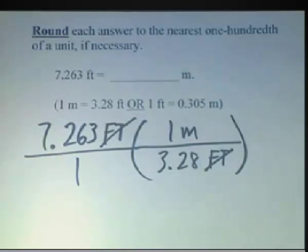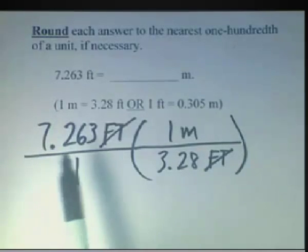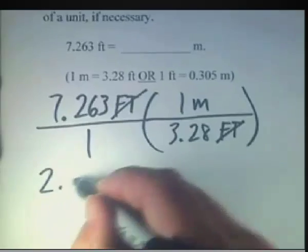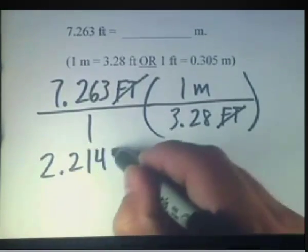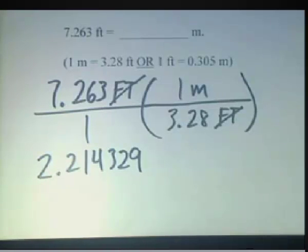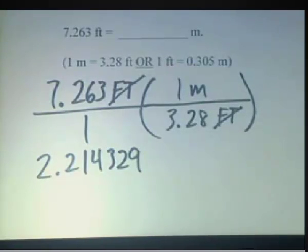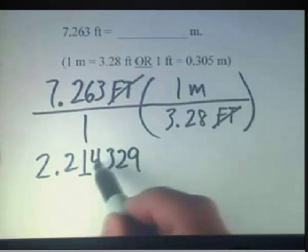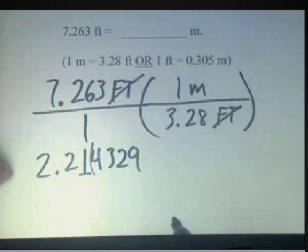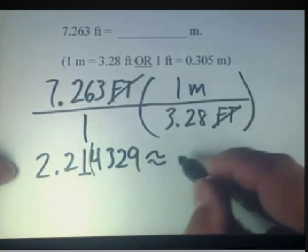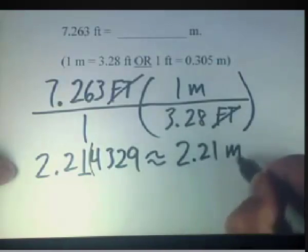So now we simply do our division problem. We're going to divide 7.263 by 3.28, and doing this on our calculator, we get a number like 2.214329, and so forth. We want to round this to the nearest one-hundredth of a unit. Here's our tenth, and here's our hundredth, and since 4 is smaller than 5, we leave it as is. So we can write our answer as approximately 2.21 meters.